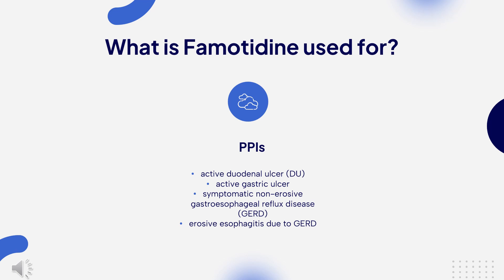The intravenous formulation of Famotidine is available for some hospitalized patients with pathological hypersecretory conditions or intractable ulcers, or as an alternative to the oral dosage form for short-term use in patients who are unable to take oral medication. Over-the-counter Famotidine is used for the management and prevention of heartburn caused by gastroesophageal reflux in children and adults.